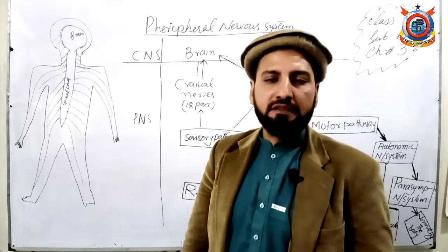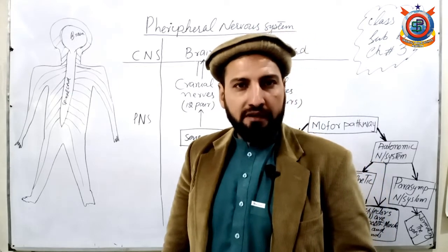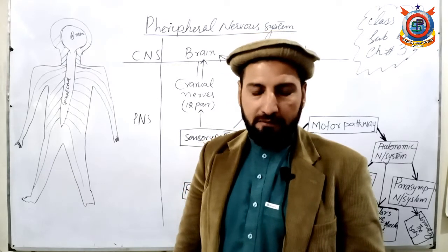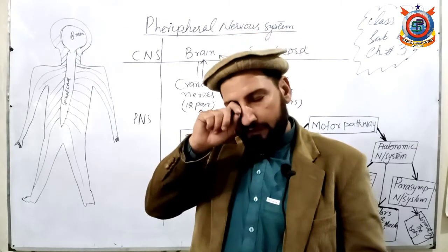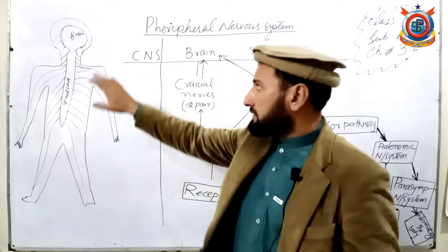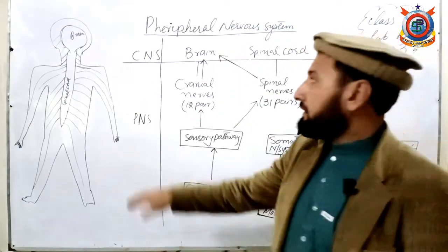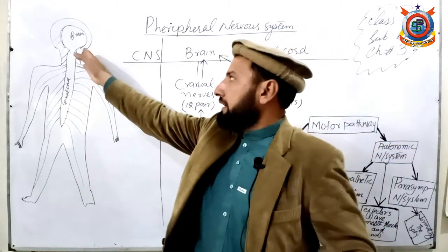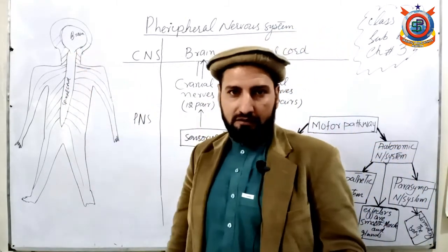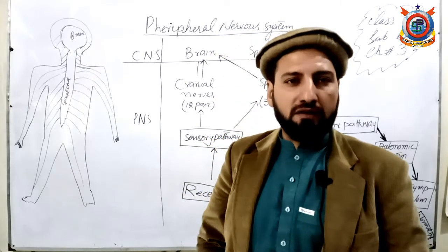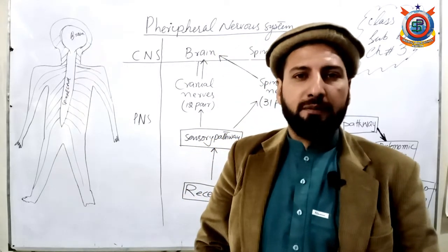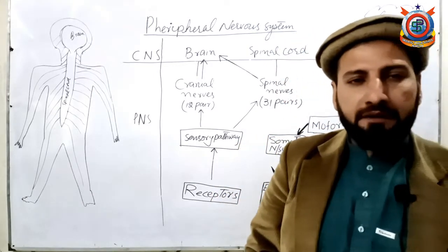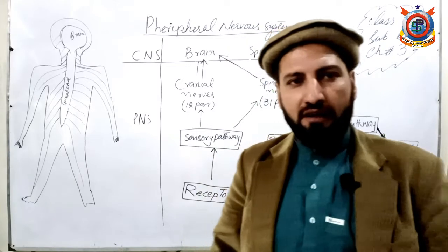So the nervous system in our body consists of two major parts: one is the Central Nervous System and the other is the Peripheral Nervous System. The Central Nervous System consists of the brain and spinal cord. The Peripheral Nervous System consists of nerves that arise from the brain and spinal cord — یعنی brain اور spinal cord سے نکلنے والے nerves آپ کے body کے اندر بناتے ہیں Peripheral Nervous System۔